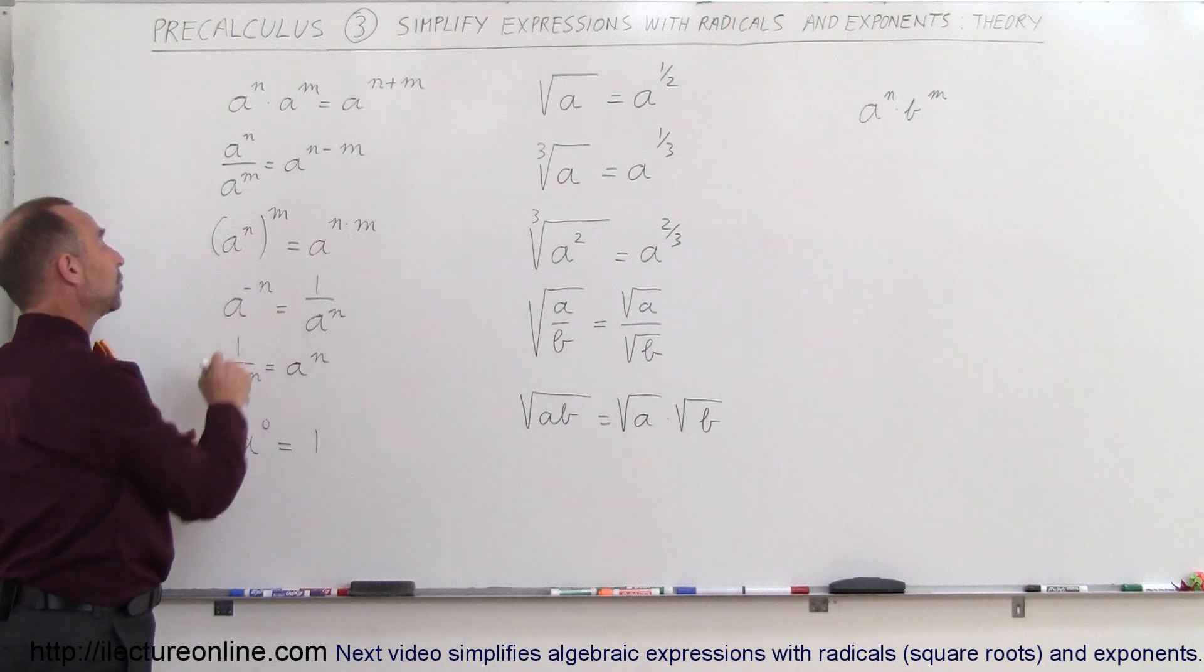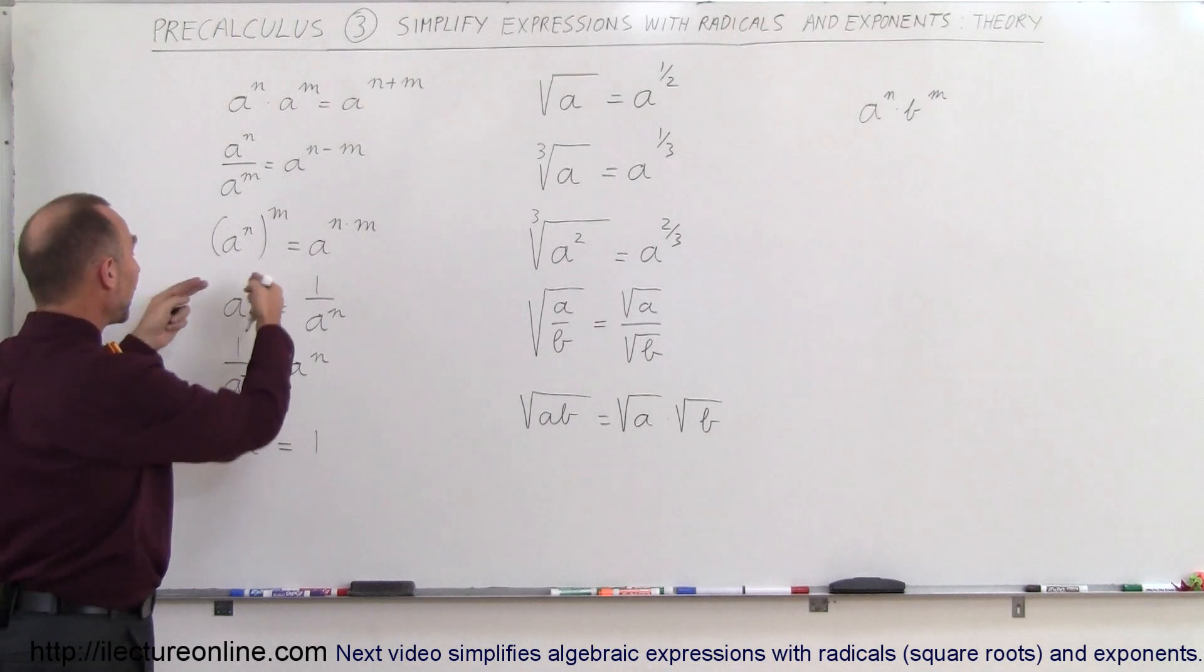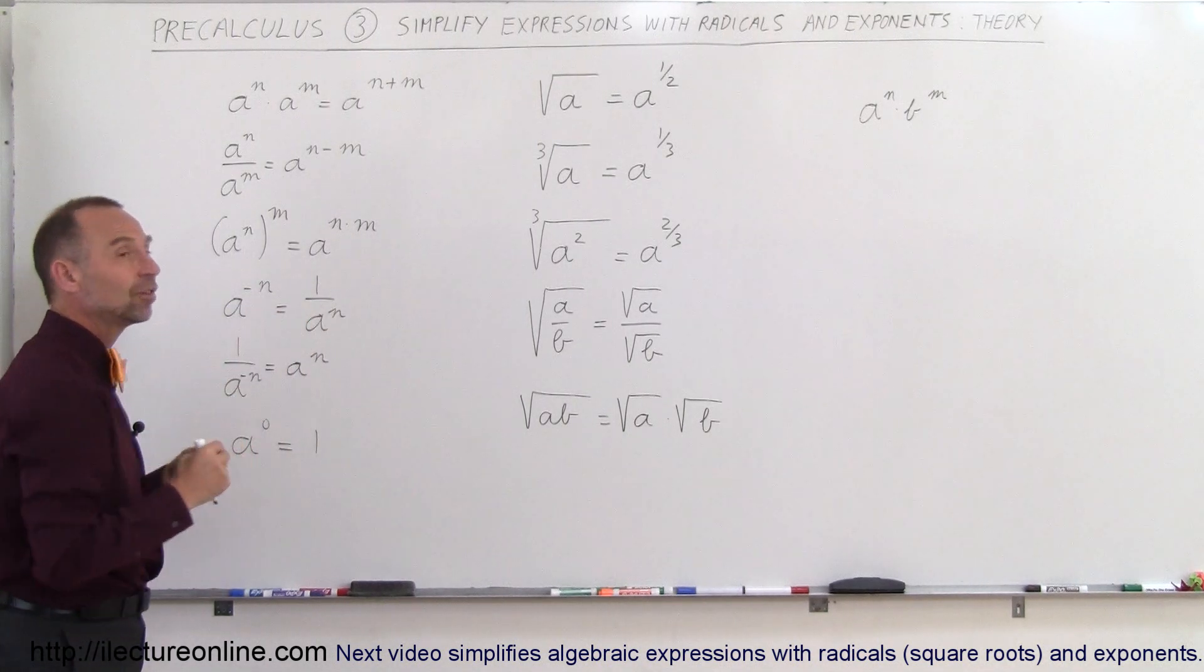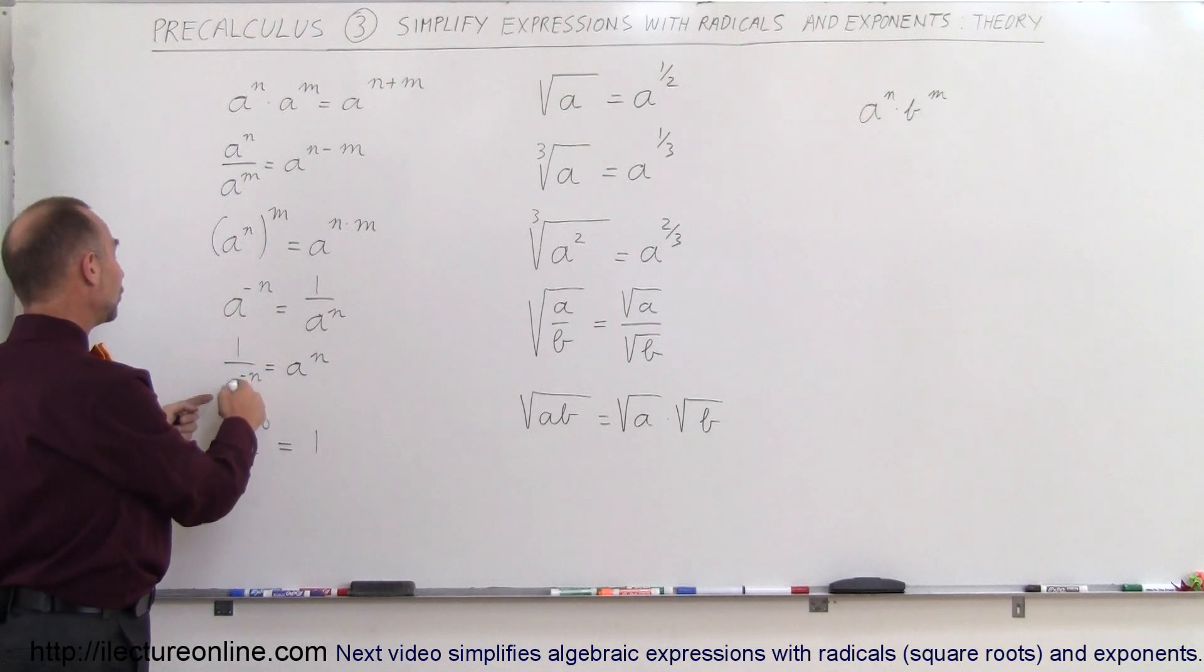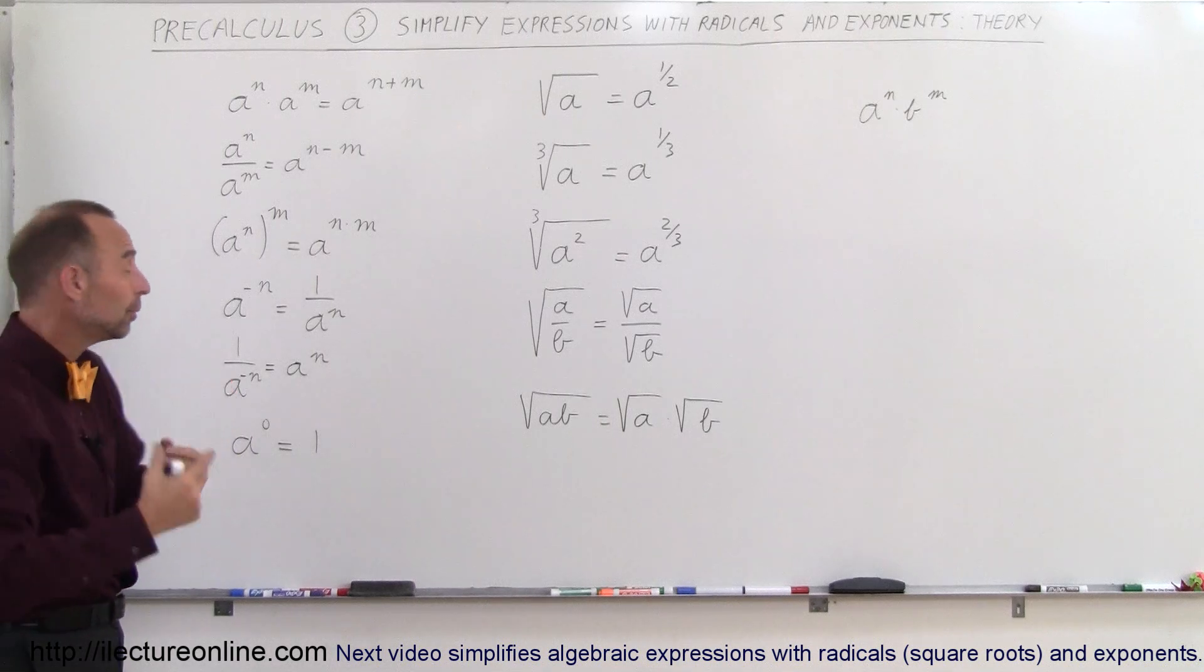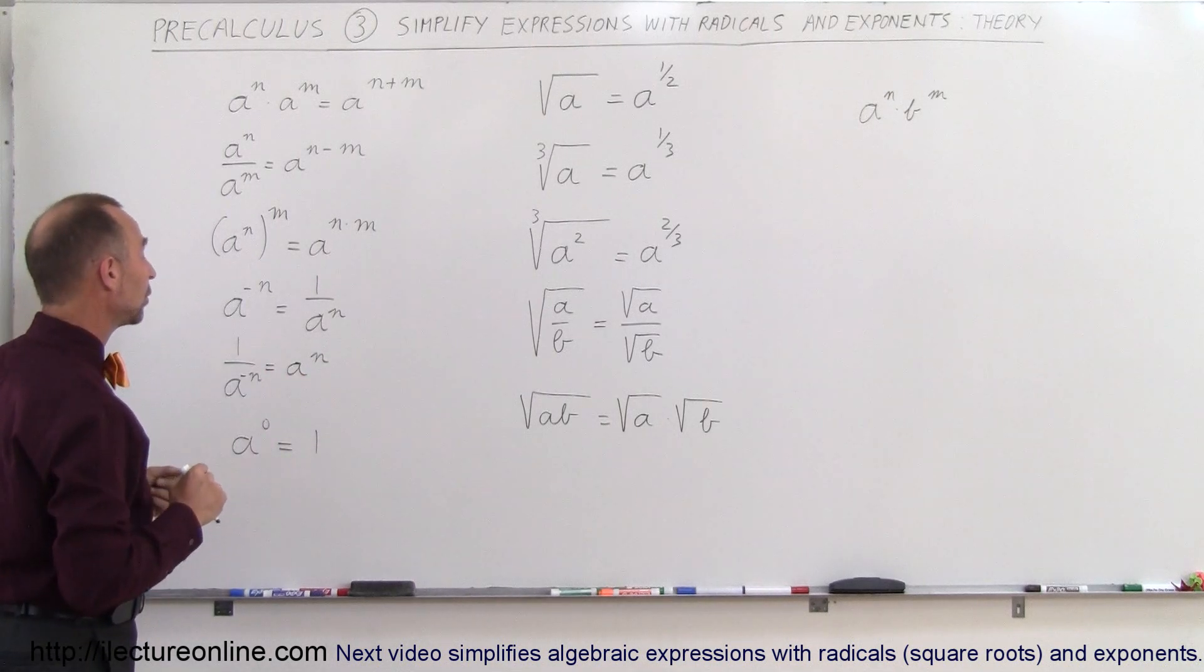If we have a negative exponent, you can simplify that by writing it in the denominator, which changes the exponent to a positive exponent. If we have 1 over A to the negative exponent, we can bring that to the numerator and turn it into a positive exponent.